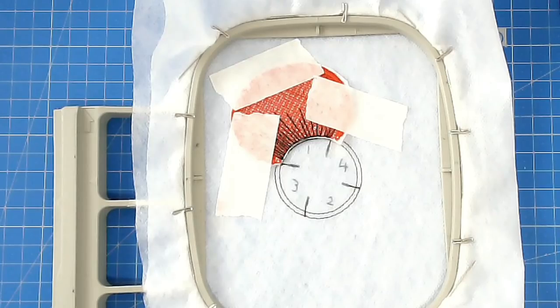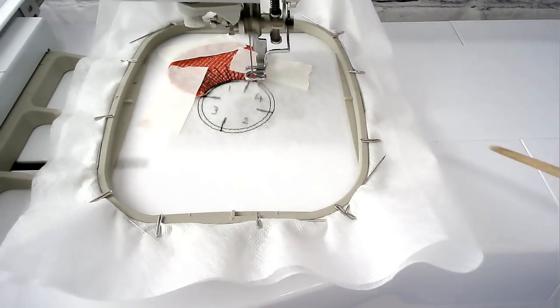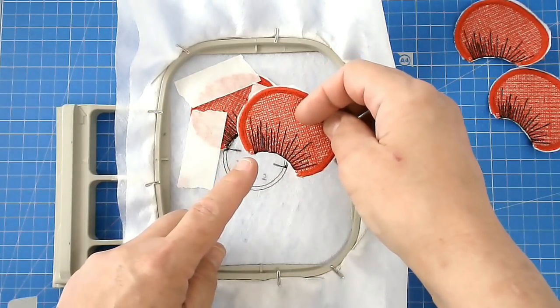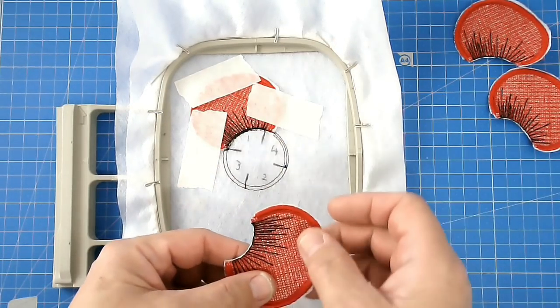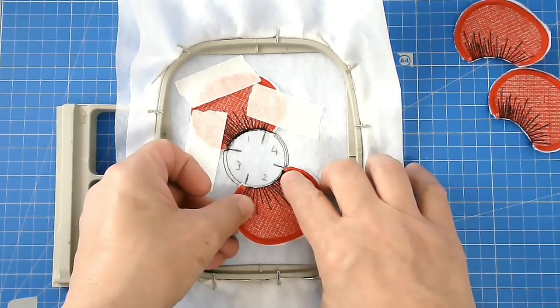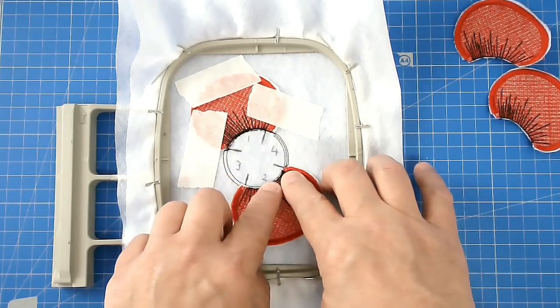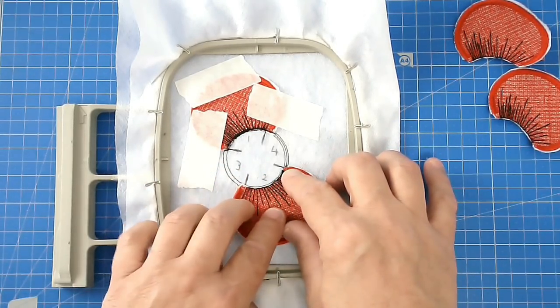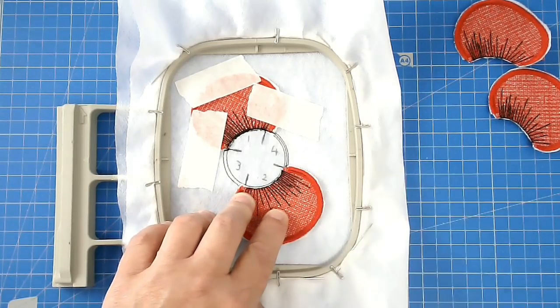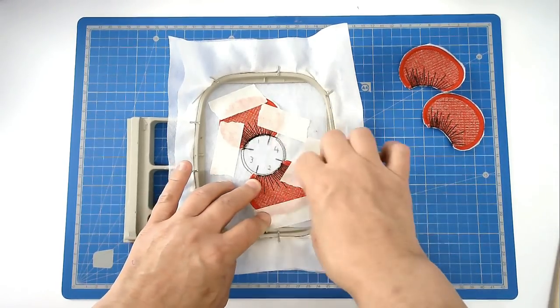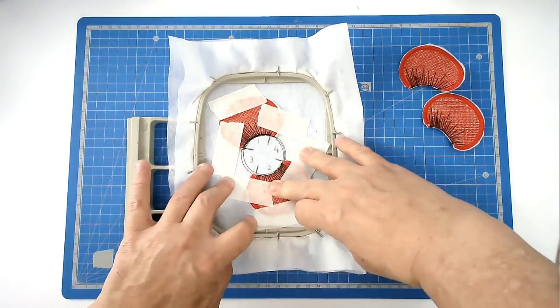And the stitch order is going to be one, two, three, and four, so that's the order that we're going to add our petals in. Once you've positioned your petal, load your hoop into your machine and then you're going to stitch round number two and that's going to secure it. So this corner of your petal is going to line up with this marker here.